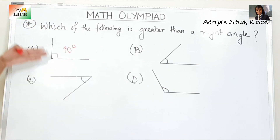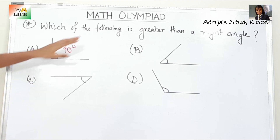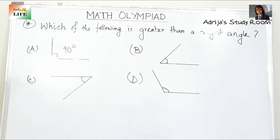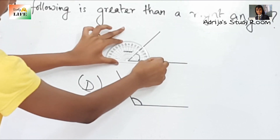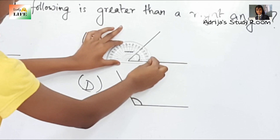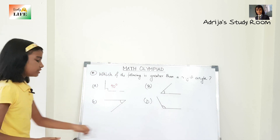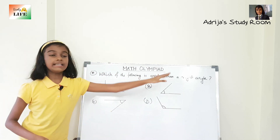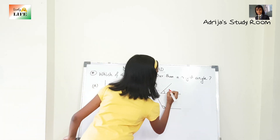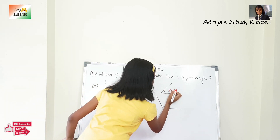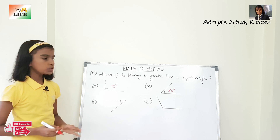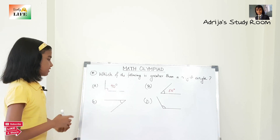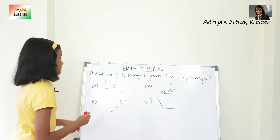This first angle is 90 degrees, known as a right angle — but that is not the answer because we need greater than a right angle. The next one is about 50 degrees, which is less than 90 degrees, so it is also not the answer. An angle that is less than a right angle is called an acute angle.